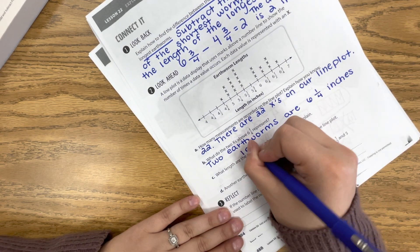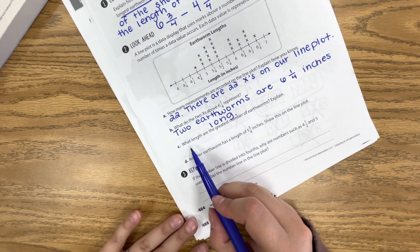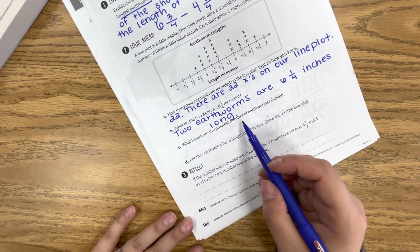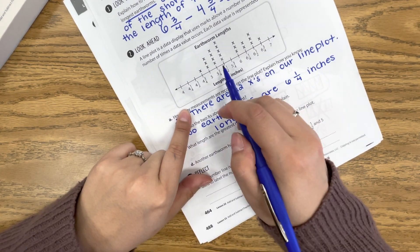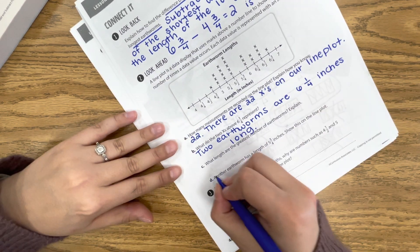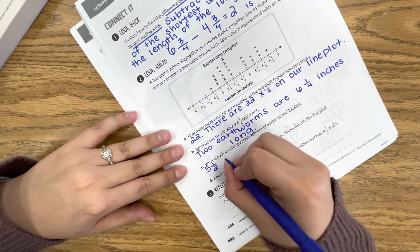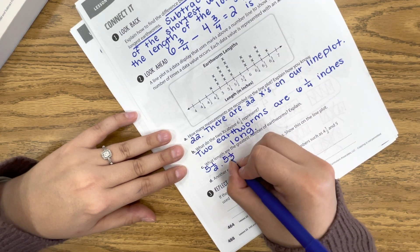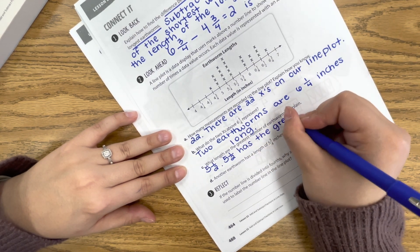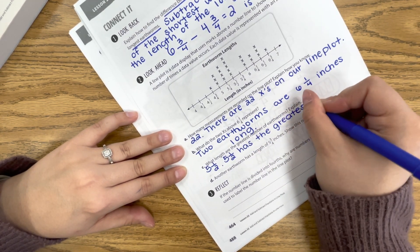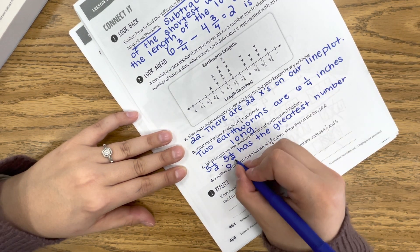So it's just reading our line plot, getting the information from the line plot that we're supposed to be getting. So what length are the greatest number of earthworms? So that means which one of these measurements has the most X's, and that is 5½. So 5½ inches has the most, so 5½, and that's because 5½ has the greatest number of X's above it.